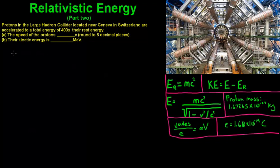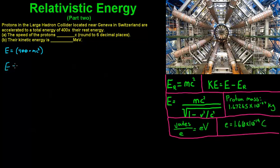First we need to figure out an equation to find the velocity. We know that the total energy is 400 times the rest energy, and the rest energy is just mass times the speed of light squared. So E is going to equal 400 times mc². We're going to substitute that in later, because first we need to derive an equation to find v. We've got E equals mc² divided by the square root of 1 minus v²/c².